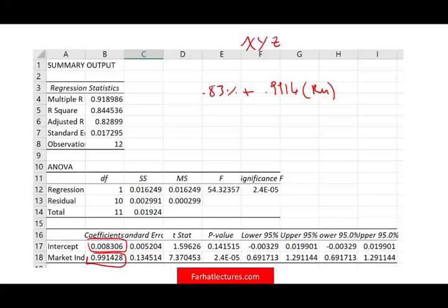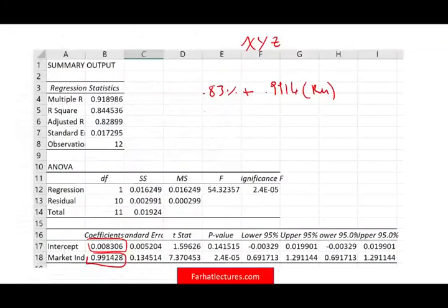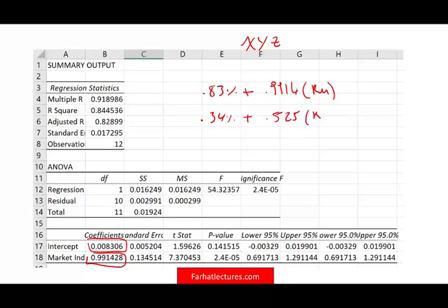So this is the regression line for XYZ stock. The regression line for ABC was 0.34% plus 0.525 times the risk premium. So this is XYZ, and this is ABC.